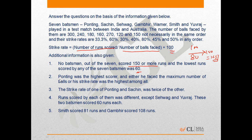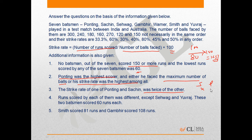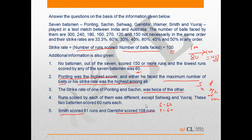Ponting was the highest scorer — he scored the maximum number of runs, and either he faced the maximum number of balls or his strike rate was the highest among all. The strike rate of one of Ponting and Sachin was twice that of the other. Runs scored by each were different except Sehwag and Yuvraj, who both scored 60 runs each. It is also known that Smith scored 80 runs and Gambhir scored 108 runs.